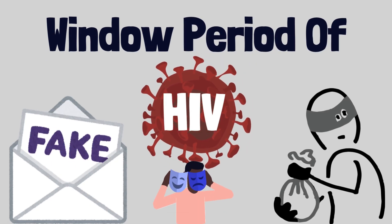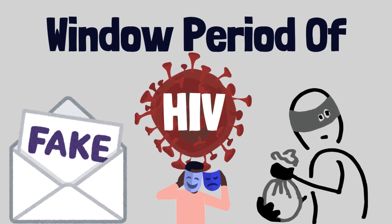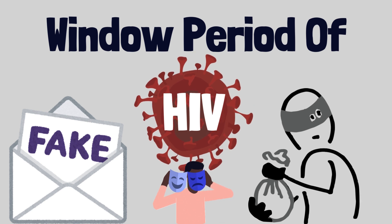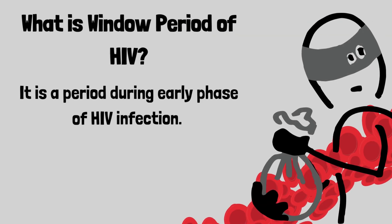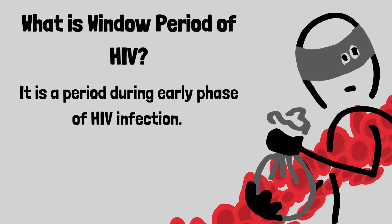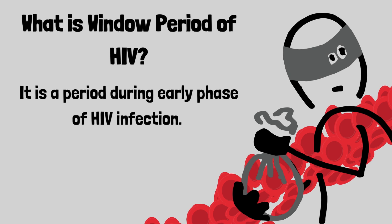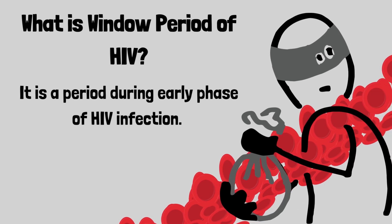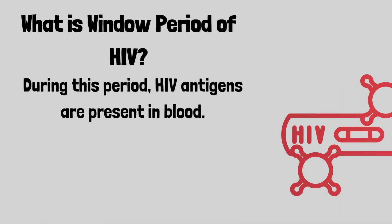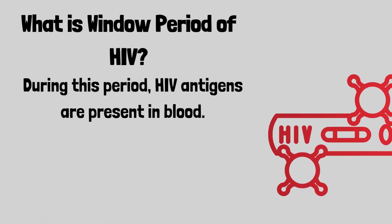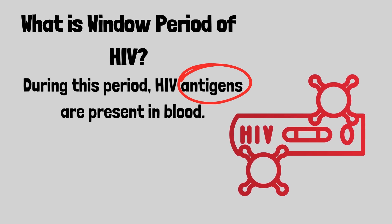In this video we will learn about the window period of HIV infection. What is the window period of HIV infection? It is a period during the early phase of HIV infection. During this period, HIV antigens are present in the blood.